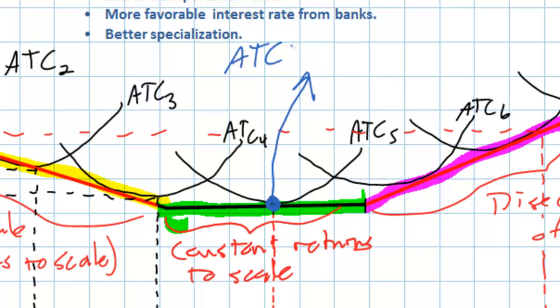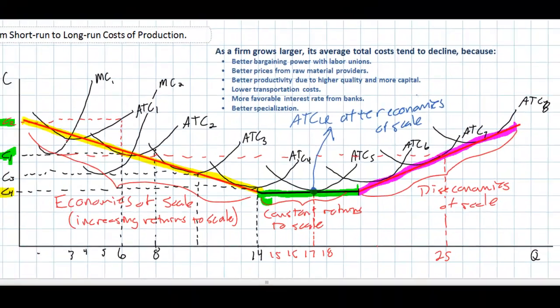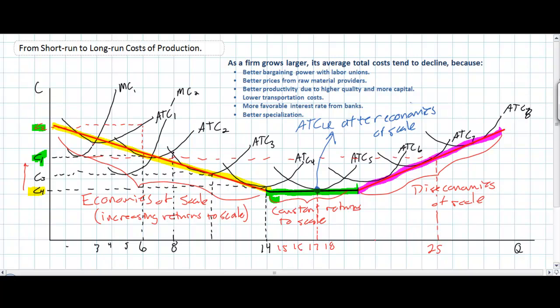The long-run average total cost is minimized only after the firm has experienced economies of scale. The concept of economies of scale will be referenced throughout the theory of the firm. For example, in an industry requiring large amounts of capital to achieve low average total costs, economies of scale may pose a barrier to entry for new firms. Boeing and Airbus have a virtual duopoly on the manufacture of large airplanes due to large economies of scale — if you opened one factory today, your average total cost would be so high that you could never sell airplanes at the lower prices Boeing and Airbus achieve.